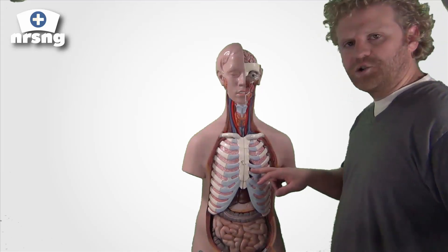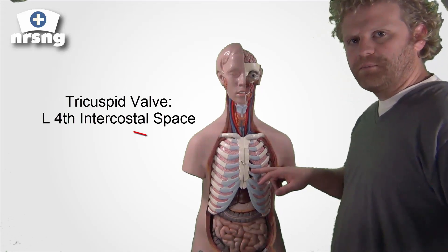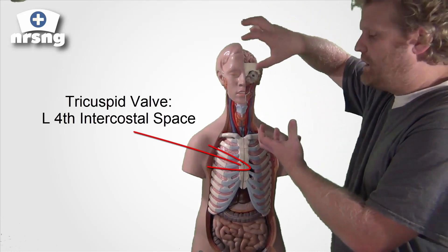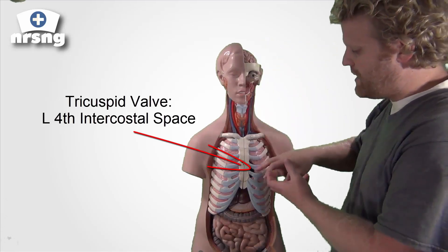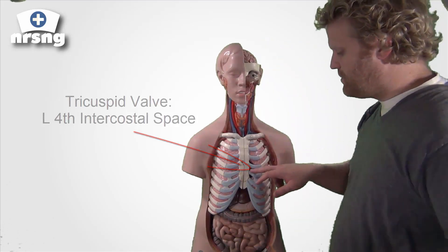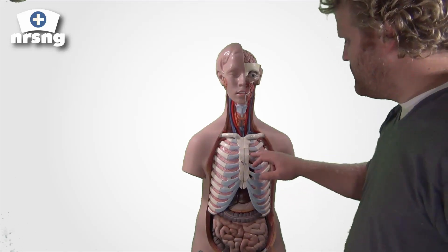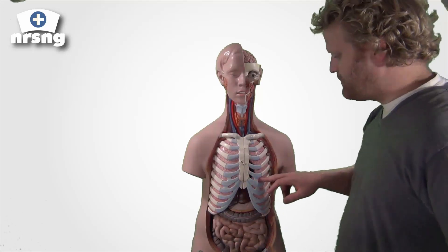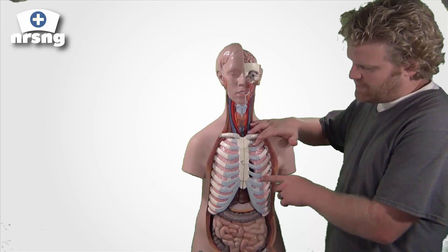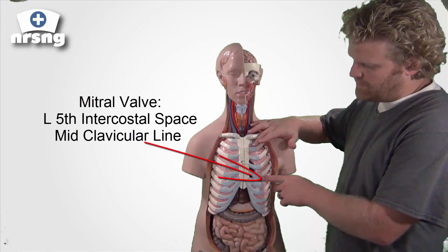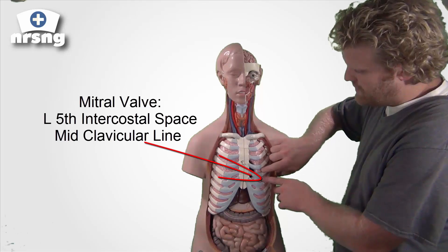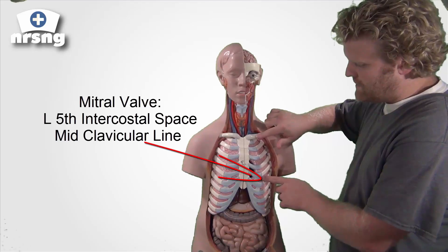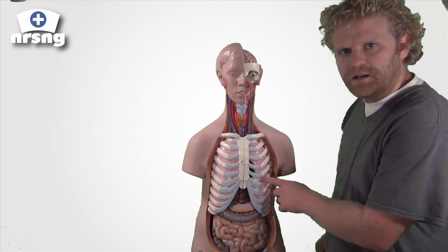From there we move on to our tricuspid valve. The tricuspid valve sits between the right atria and the right ventricle, and we'll hear it at the fourth intercostal space along the sternal border — that's the T in APE 2 T. Then for our mitral valve — the Man — we go to the fifth intercostal space, mid-clavicular line, right along the center of the clavicle.